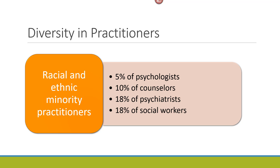In the United States, Caucasians, or whites, are approximately 62% of the population but dominate mental health services. According to a report from the U.S. Department of Health and Human Services to Congress, racial and ethnic minorities make up only 5% of psychologists, 10% of counselors, and 18% of psychiatrists and social workers. These small percentages demonstrate the lack of minority representation in the provision of mental health services. Diversity is a consideration, as many of our clients come from minority backgrounds.